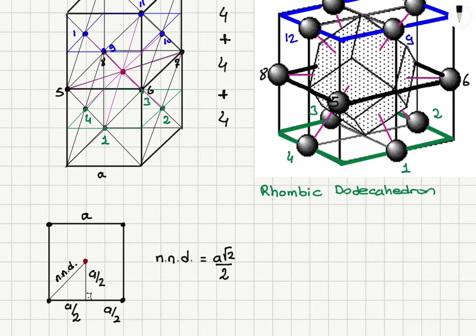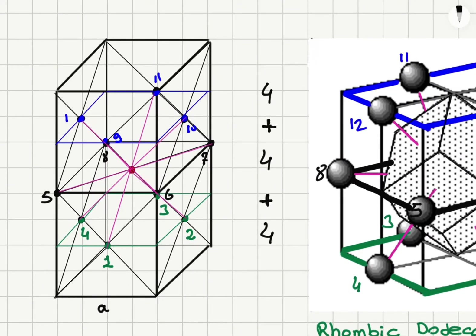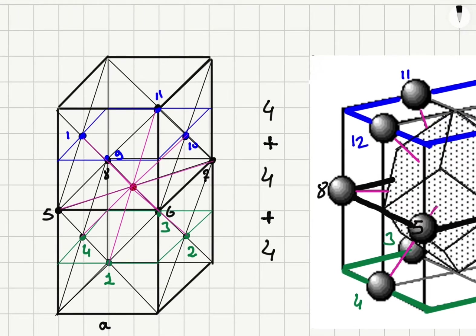So the nearest neighbor distance is a√2/2. With respect to this reference lattice point in the middle, I have lattice points on the green plane: 1, 2, 3, 4; lattice points on the black plane: 5, 6, 7, 8; and lattice points on the blue plane: 9, 10, 11, and 12. So we have 12 nearest neighbors.